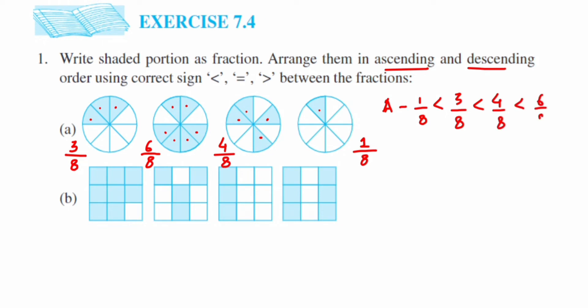Continuing ascending order: 4/8 is less than 6/8. So the ascending order is 1/8 < 3/8 < 4/8 < 6/8. For descending order — greater to smaller — we simply write the opposite: 6/8 > 4/8 > 3/8 > 1/8. That completes the first problem.